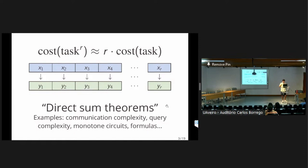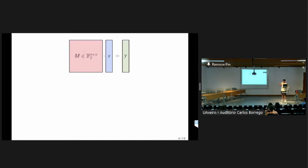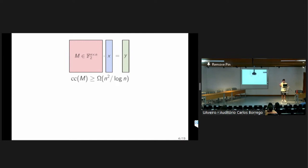To give a canonical example of this, it comes from matrix multiplication. Say you fix some n by n matrix M over the field with two elements, and you consider an input x which you interpret as an n by one column vector. Your goal is just to perform the matrix-vector multiplication to multiply x by this fixed matrix M to get an output y. Then if you look at Boolean circuit complexity — measuring the cost by the number of AND, OR, and NOT gates needed — it's not hard to show by a simple counting argument that you need basically n squared many gates, in fact a bound like n squared over log n.